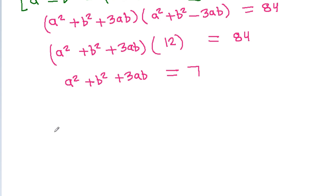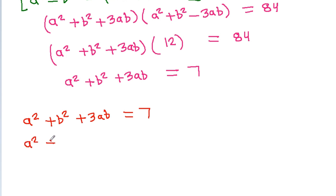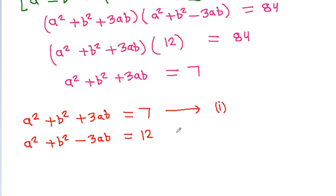So we get a² + b² + 3ab = 7 — call this equation 1. And we have given that a² + b² - 3ab = 12 — call this equation 2.